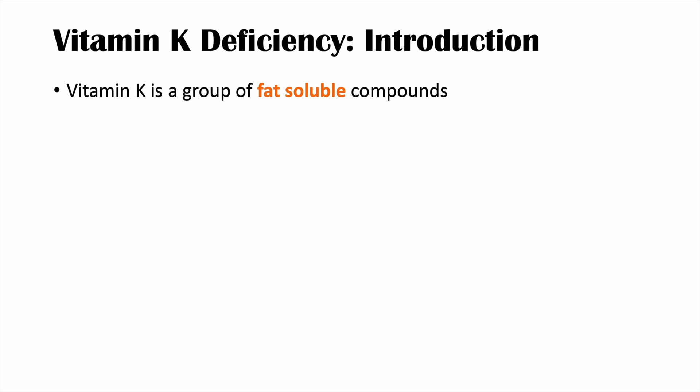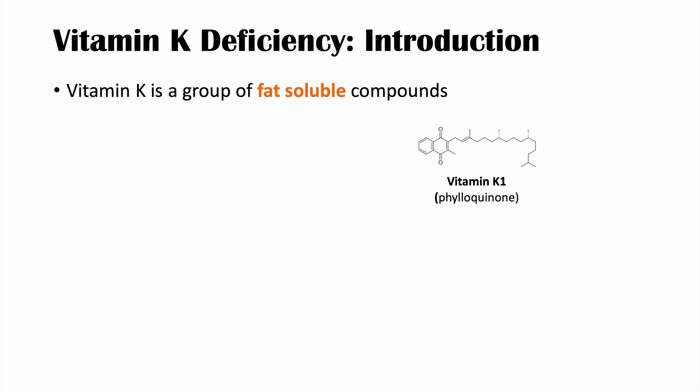So what is vitamin K? Vitamin K is actually a group of fat-soluble compounds — there are multiple compounds that we call vitamin K. One of them is vitamin K1, which is phyloquinone, and another one is vitamin K2, which is menaquinone. Vitamin K is one of the fat-soluble vitamins; the others are vitamin D, E, and A.